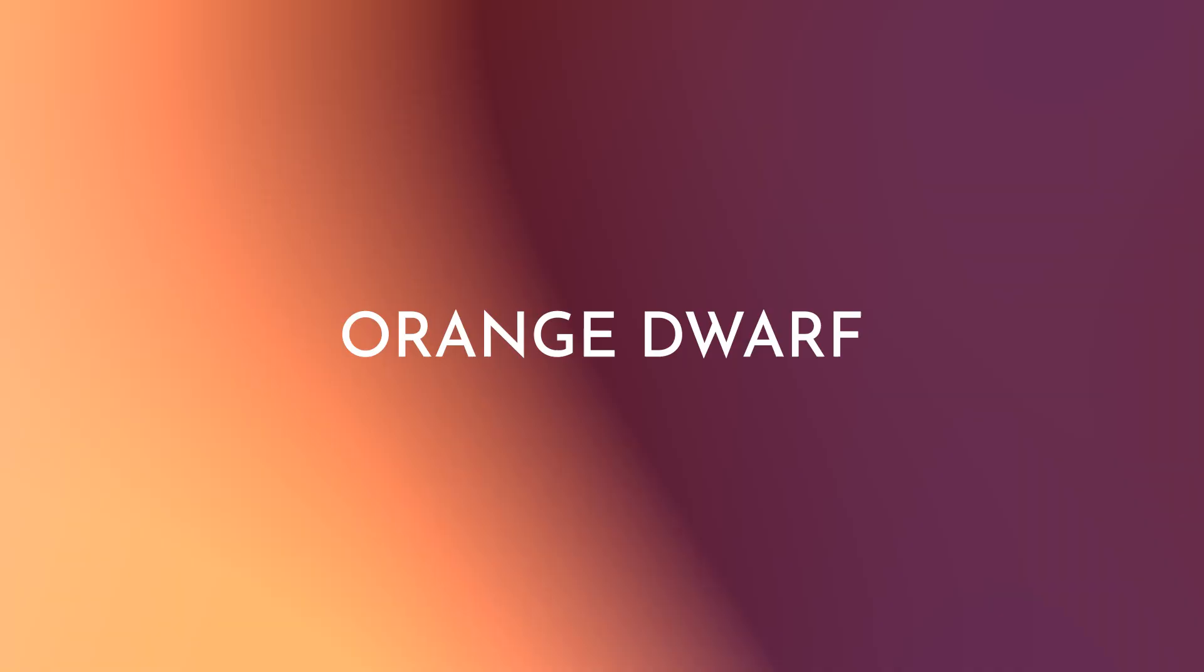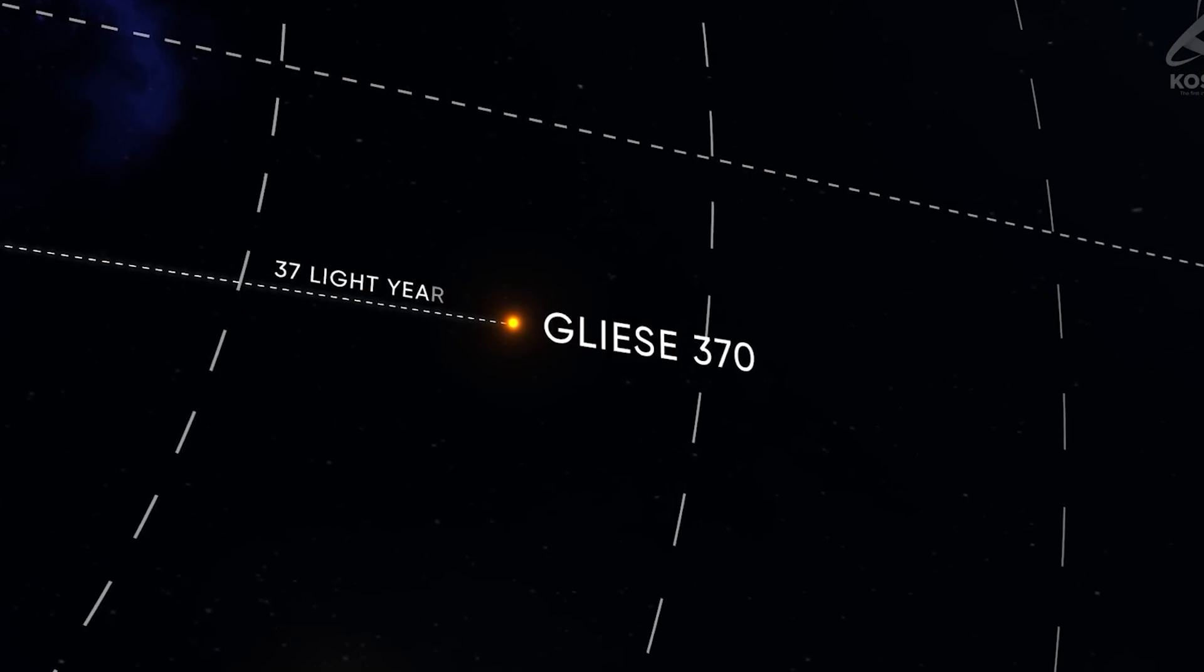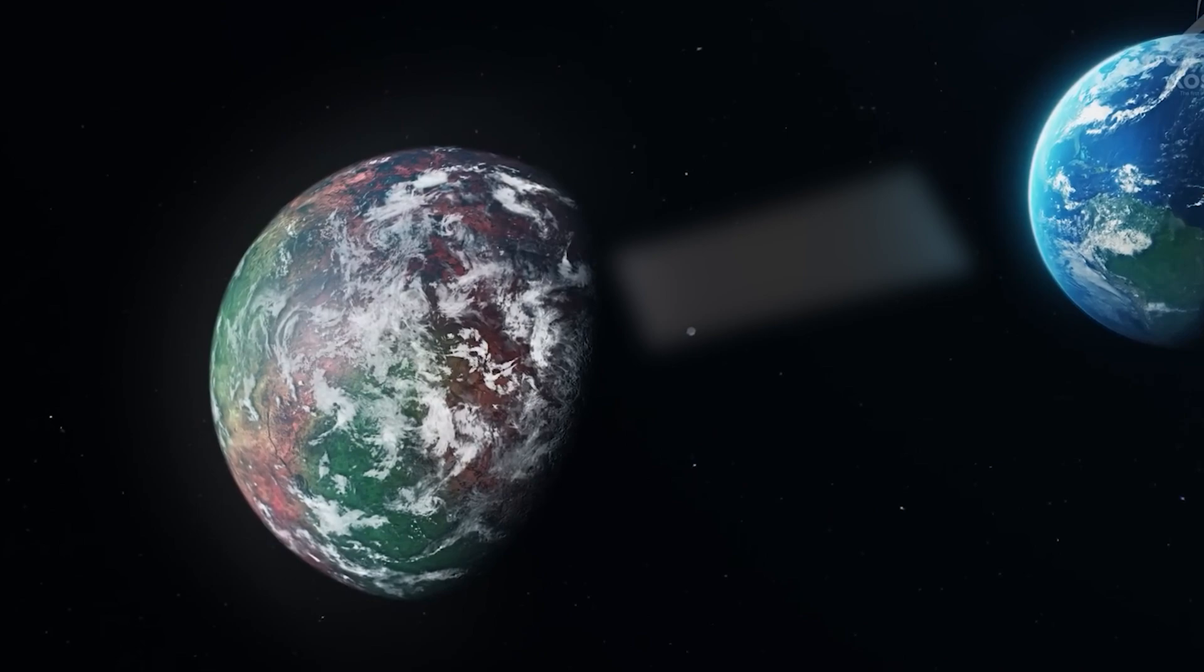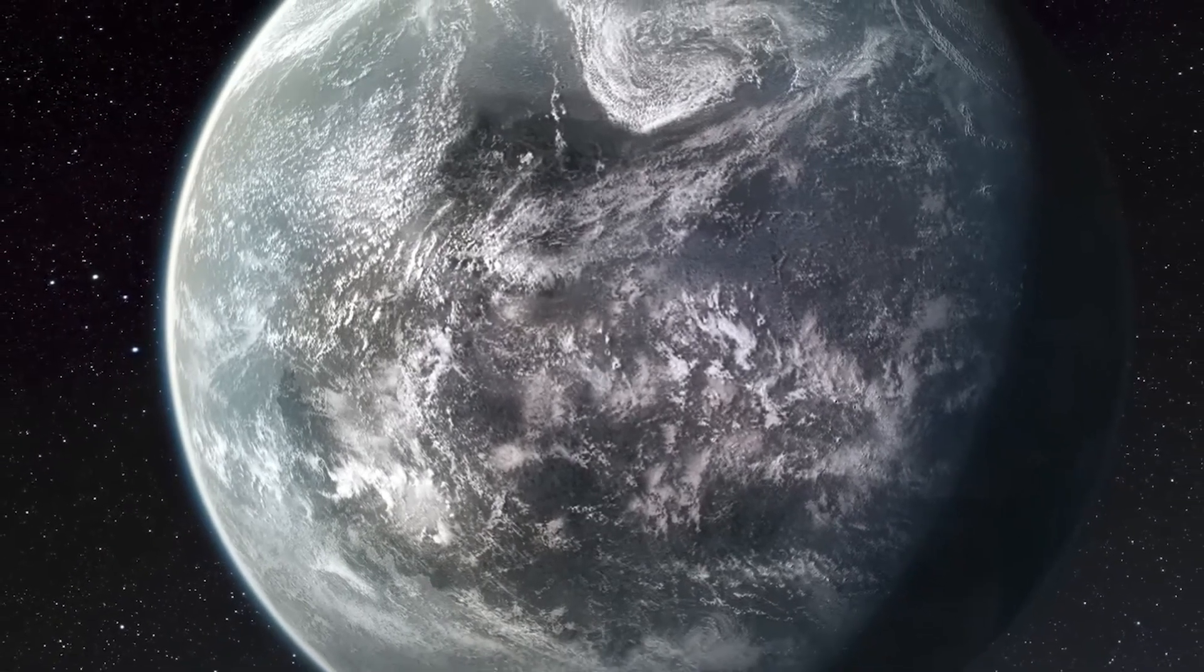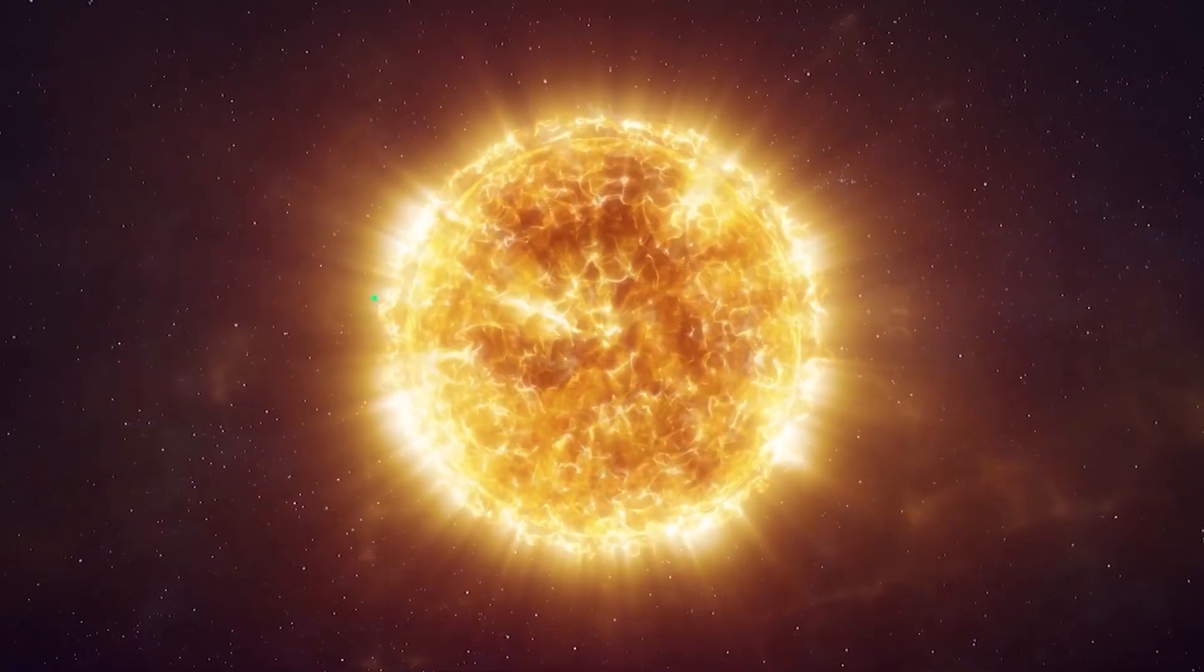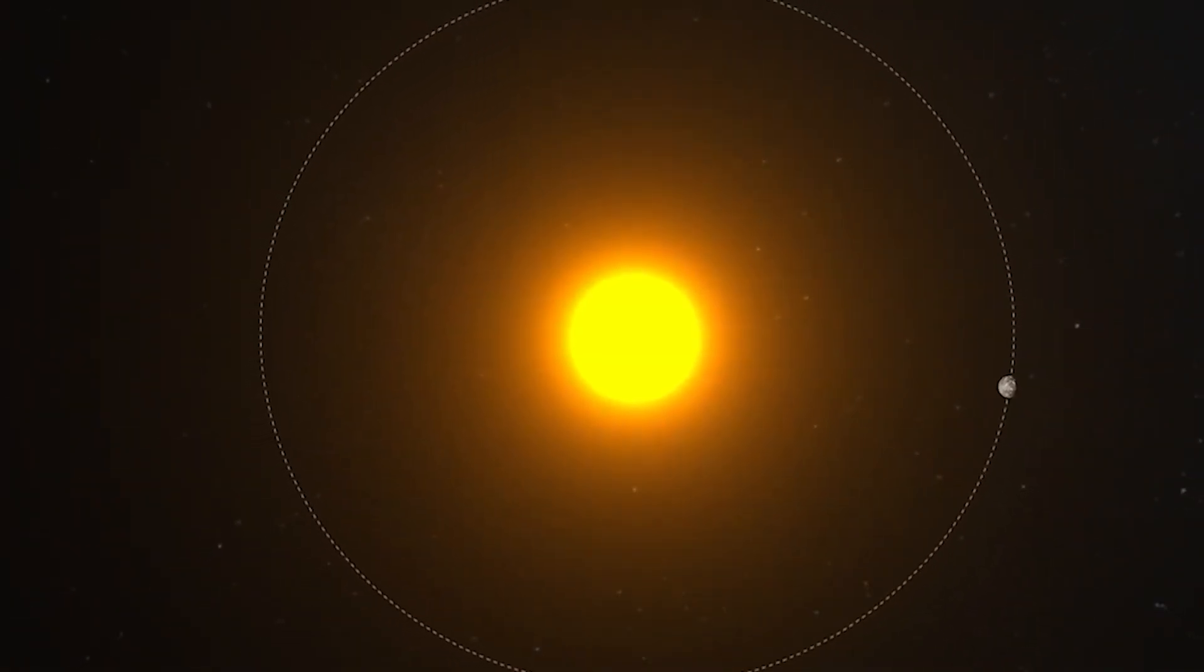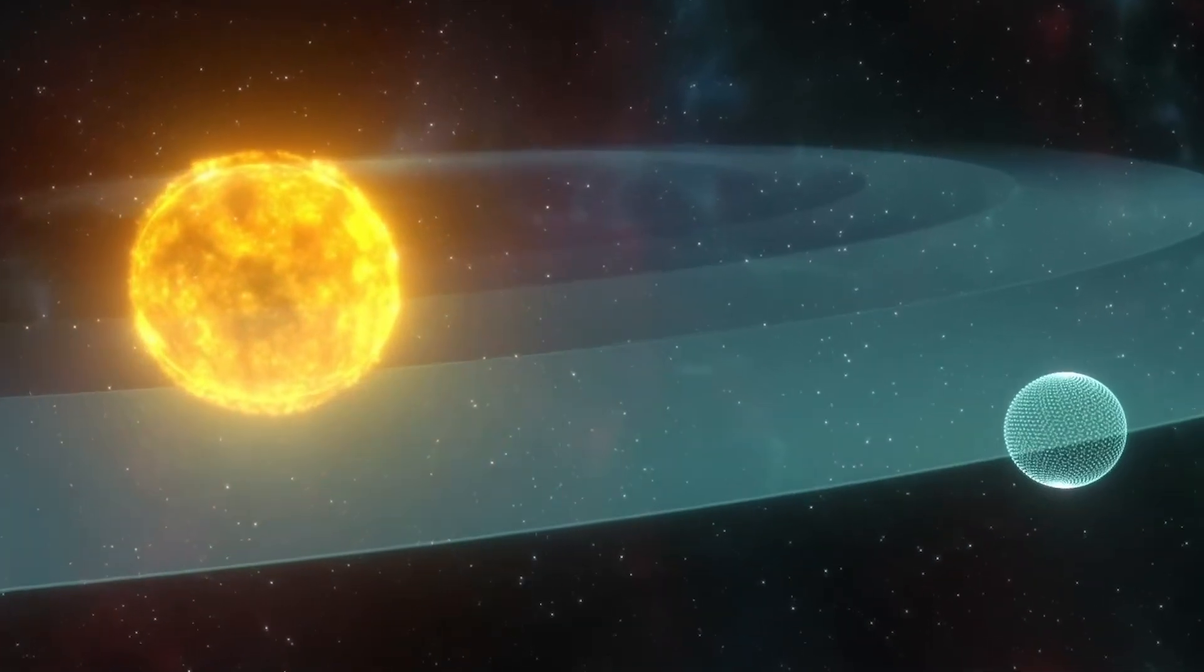Orange dwarf. Our next stop is 37 light years from Earth, near the orange dwarf known as Gliese 370. In 2011, a single exoplanet was discovered nearby, designated Gliese 370b. The object has a mass of 3 to 4 Earths. According to the most recent study, the discovered world is most likely a rocky planet with a radius about 30% larger than the Earth. That means the gravity there would be 40% higher than we're used to. This planet is located 0.26 astronomical units from its star and completes the annual rotation in 54.4 Earth days. Thus, this exoplanet is within the habitable zone of its star.